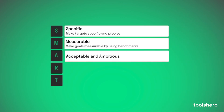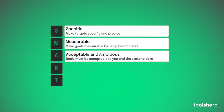The A for Acceptable and Ambitious ensures that goals are acceptable to you and the stakeholders. SMART goals must be acceptable for you as well as for the group or the department. If you want 20% more turnover but it turns out that this was way too ambitious, it can decrease the job satisfaction.